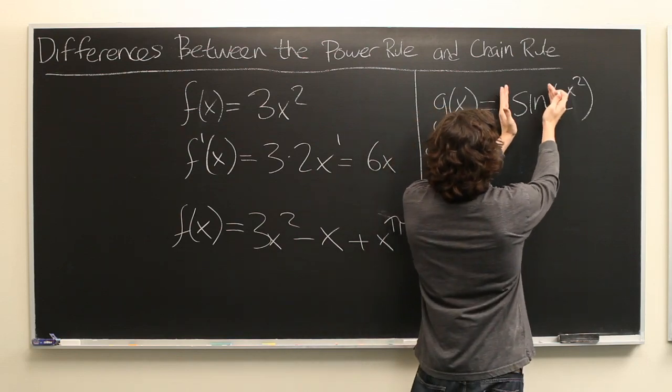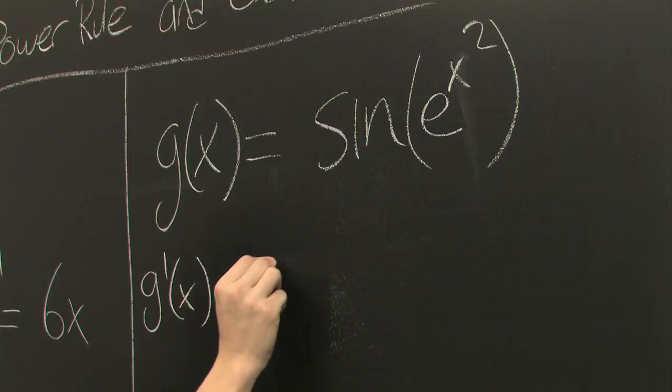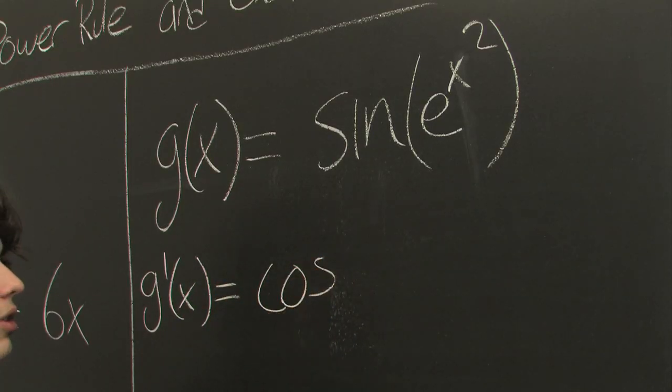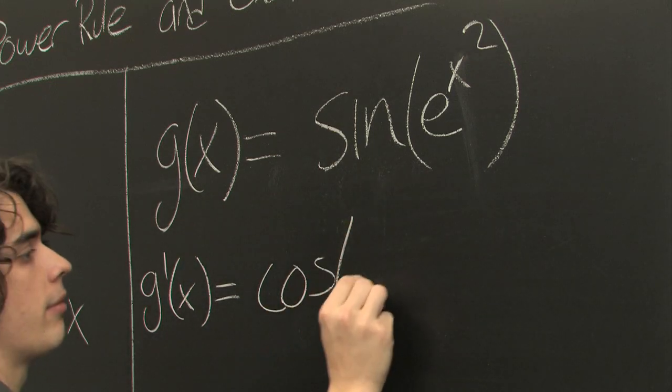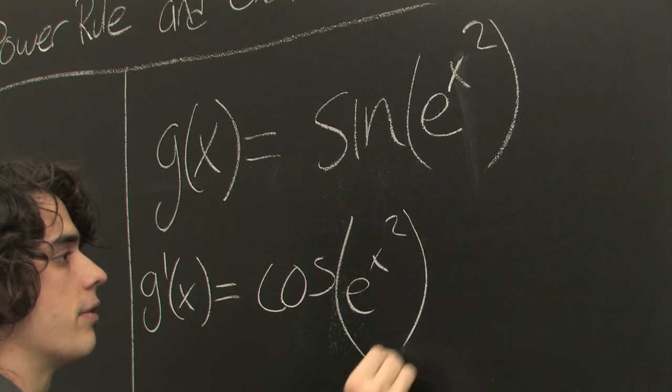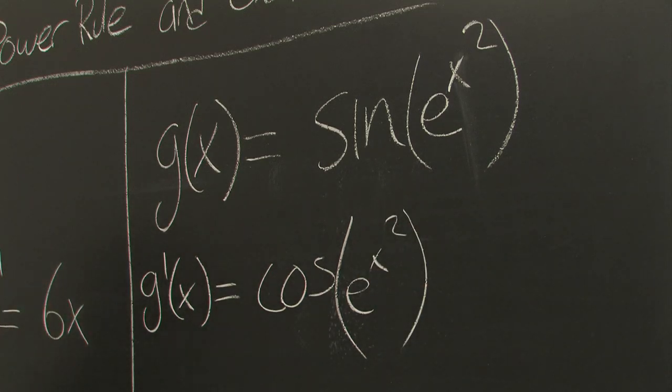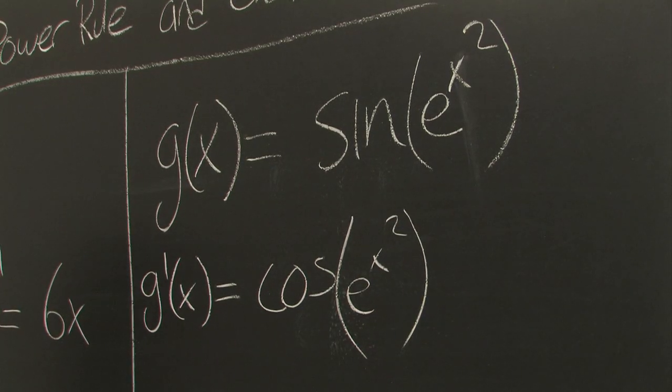So here's our outside function, sine. Let's take the derivative of that, cosine. And the inside remains the same, e to the x squared. Then we're going to multiply by the derivative of the inside.